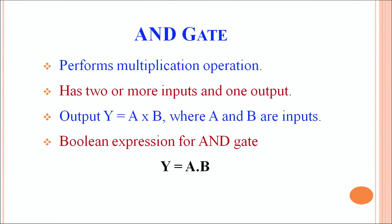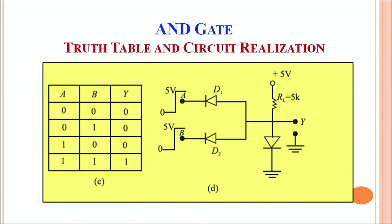The basic operation performed in an AND gate is multiplication. The output Y equals A multiplied by B, where A and B are the inputs. The Boolean expression for the AND gate is represented as Y = A·B. Let's look at the truth table and the actual circuit realization using diodes, shown in figure D.